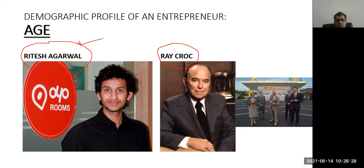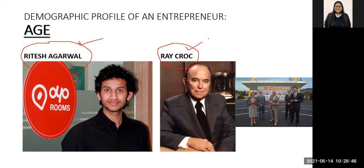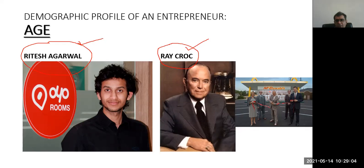He got selected to Y Combinator with the basic idea of OYO Rooms, and that's what really catapulted him to the next level and launched OYO Rooms into what it is today. On the other hand is the gentleman on your right — Ray Kroc — who is one of the founders of McDonald's. Not really the founder — he in fact took over McDonald's. There's a movie also on his life called 'Founder'.